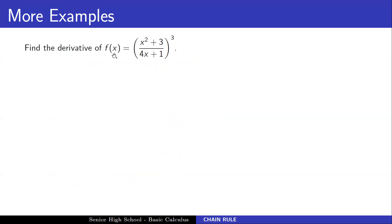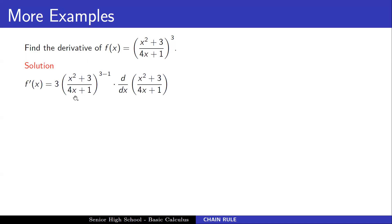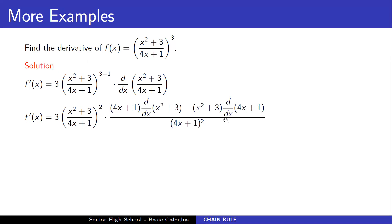Find the derivative of f(x) = [(x² + 3)/(4x + 1)]³. We use the chain rule first: f'(x) = 3[(x² + 3)/(4x + 1)]² × derivative of the inner rational function. Then we apply the quotient rule to differentiate (x² + 3)/(4x + 1): [(4x + 1)(2x) − (x² + 3)(4)] / (4x + 1)².